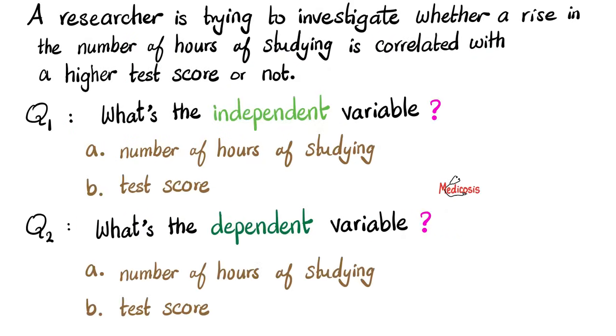So therefore, the independent variable, which is the cause, is the number of hours of studying, and the dependent variable, the effect, is the test score.